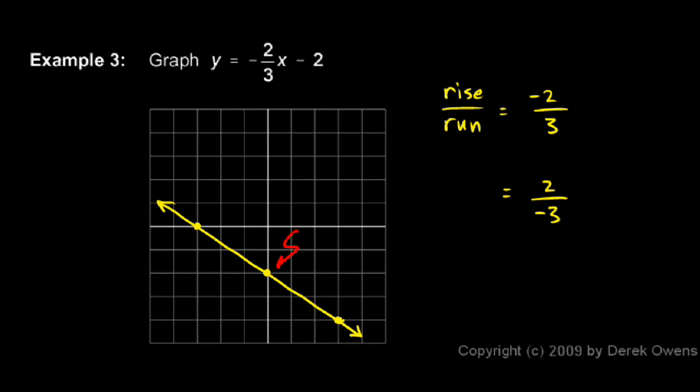Like this point right here, for example, is the point 0, negative 2. So x is 0 and y is negative 2. And if we put in a 0 for x and a negative 2 for y, this equation ends up being true.